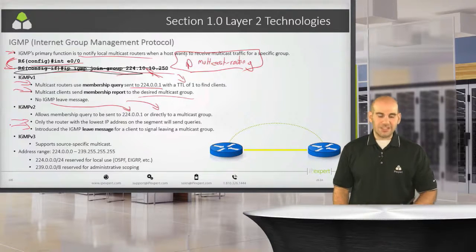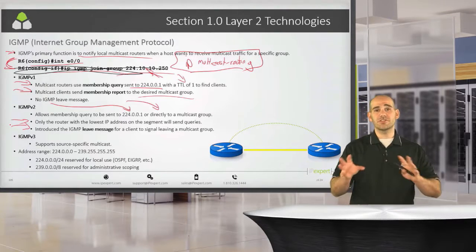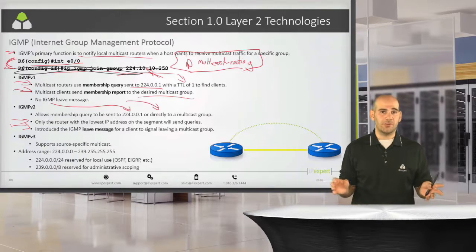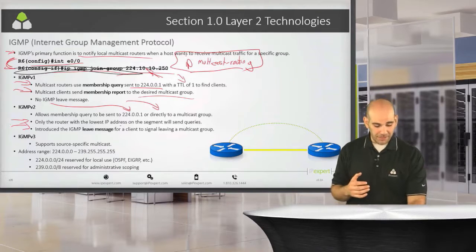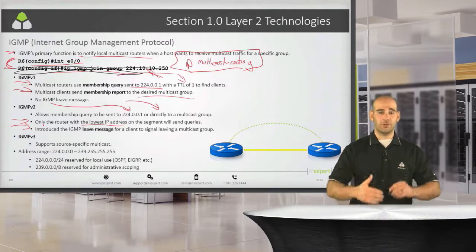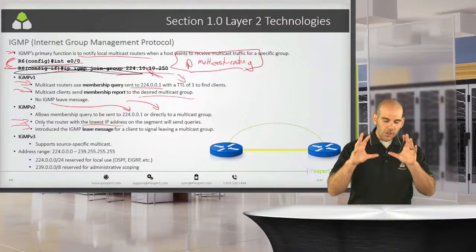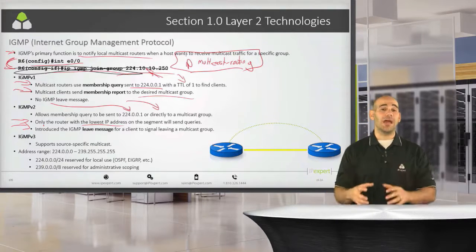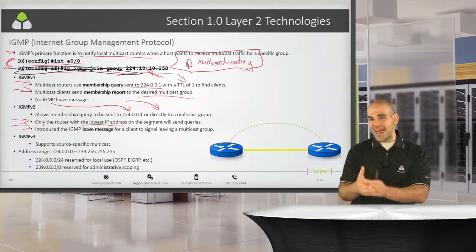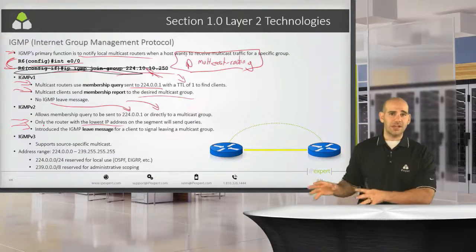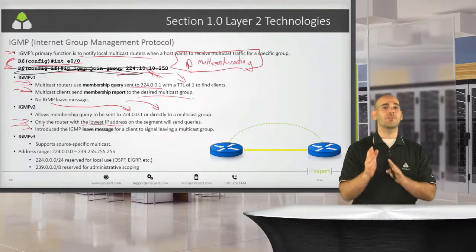Version 2 also gave us better control over the query router. Rather than having all multicast routers send membership queries, it introduced an election process based on the lowest IP address on the segment. All multicast-enabled routers on a segment participate, and whoever has the lowest IP address becomes the designated query router — the DQ, or as I call it, the drama queen. It is that router's responsibility to send out the queries. This is not the rendezvous point — that's the Layer 3 piece.